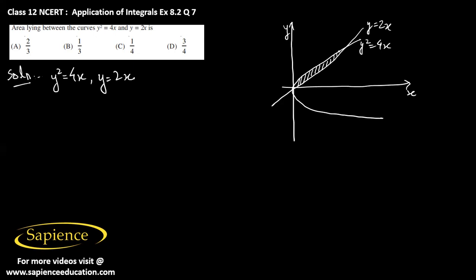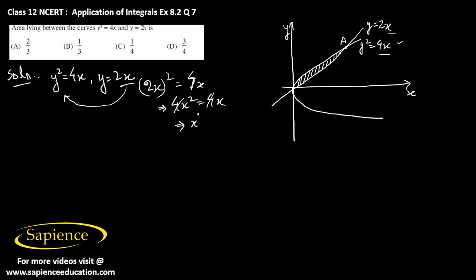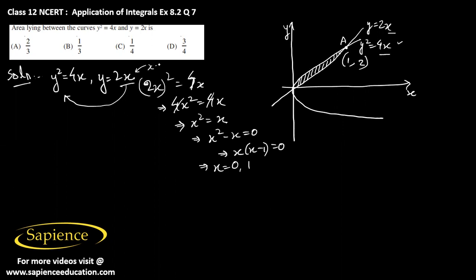We have to find the area of the region between the two curves. To find the coordinate of point A where the parabola intersects the straight line, we solve the two equations. We substitute y equals 2x into y squared equals 4x, giving (2x)² = 4x, so 4x² = 4x. The 4s cancel, giving x² = x, so x = 1. The intersection point is (1, 2).